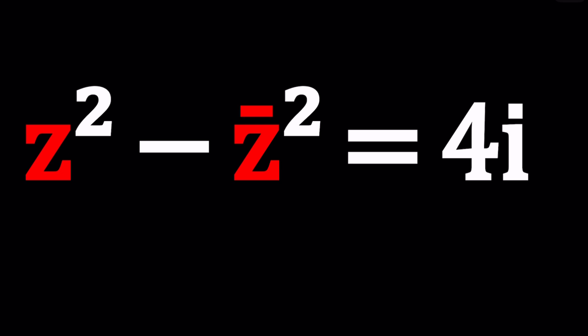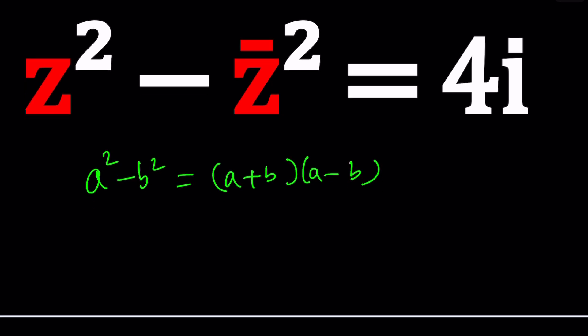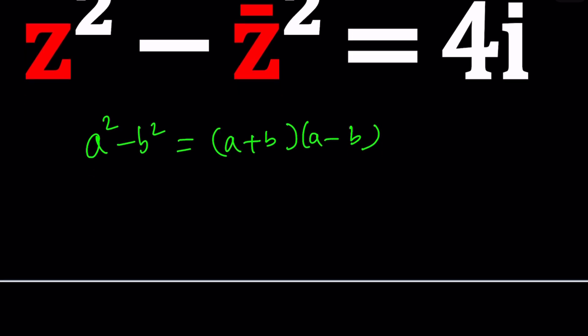When you get a problem like this, it's probably tempting to use difference of two squares, right? When you see two numbers that are squared and there's a minus sign between them, it's called the difference of two squares. In other words, a squared minus b squared can be written as a plus b times a minus b. This identity also works with complex numbers, so we can go ahead and try to factor this as z plus z bar multiplied by z minus z bar.